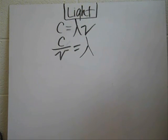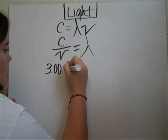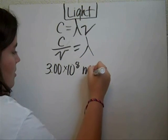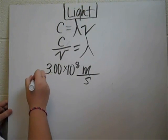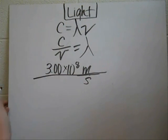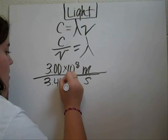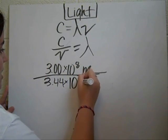And then after this, we're going to plug and chug and put in our values. So C is 3.00 times 10 to the 8th meters per second. And then we're going to divide that by the value they gave us, which is 3.44 times 10 to the 9th inverse seconds.